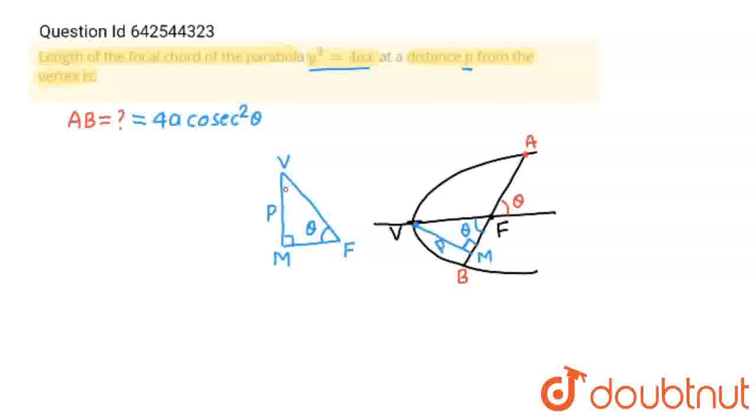VM is p. And VF, the distance between vertex and focus, is a. So from there we can say that sin theta equals p upon a. So cosec theta will equal a upon p.